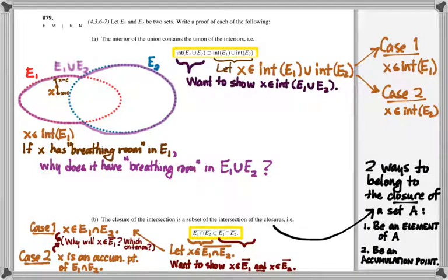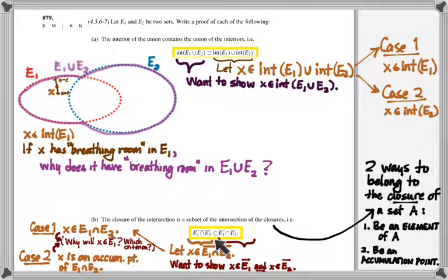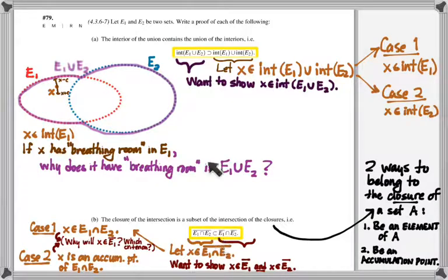Hopefully these proof skeletons help you set up the arguments usefully. To connect this with other work in the packet: the fact that the union of the interiors is a subset of the interior of the union relates to why the union of two open sets is open — question four on the eighth group assignment. Likewise, the closure statement helps argue why the intersection of two closed sets is closed. Incidentally, both containments actually go both ways: the interior of the union equals the union of the interiors, and the closure of the intersection equals the intersection of the closures — but you only need to prove one direction in this homework, which happens to be the less trivial direction.